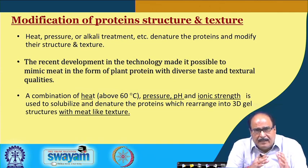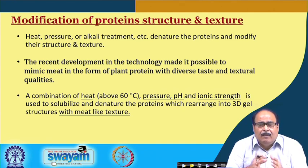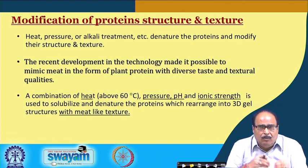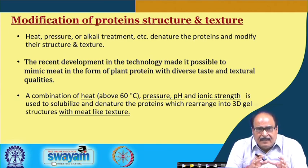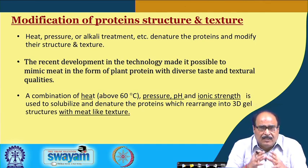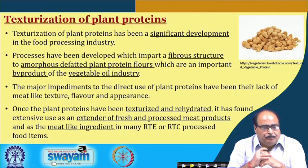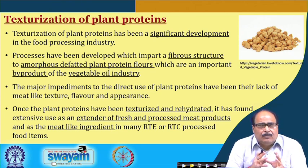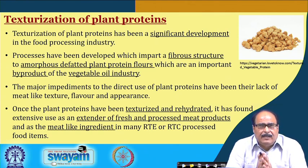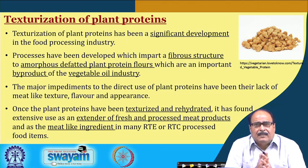A combination of heat generally above 60 degrees Celsius, pressure, pH, and ionic strength is used to solubilize and denature food proteins. Under these conditions, proteins rearrange themselves into 3D gel structures which give the characteristics of meat-like texture and other properties. This process we call texturization — the texturization of plant protein has been a very significant development in the food processing industry.